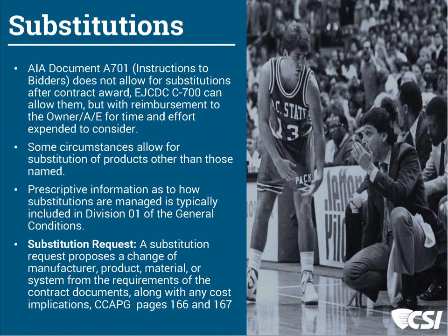Now let's talk about substitutions, which are very different from modifications. Our documents — whether in instructions to bidders like AIA document A701 — talk about what substitutions are and when they can be made. Some are allowed, some are not. The perspective on substitutions, what expectations are, and how they're managed is typically found in Division 1 in the general conditions.